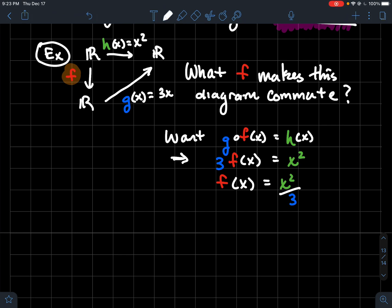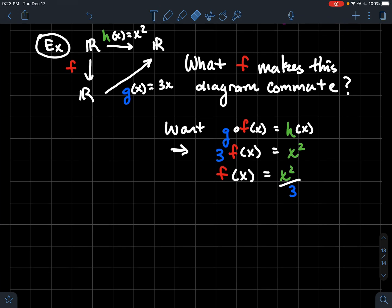By the way, there is a symbol that sometimes authors or mathematicians use to indicate that a diagram commutes, and they'll do like a little squiggly arrow inside. So a little rounded arrow. And that usually indicates that the diagram commutes. Cool. Anyway, there's kind of a concrete example where how we check that a diagram commutes, or how we find a function that will make the diagram commute.